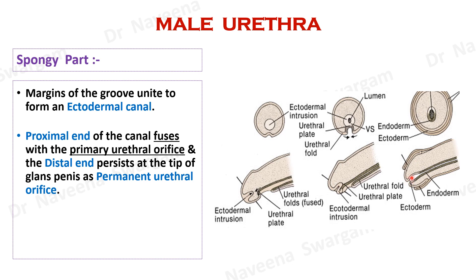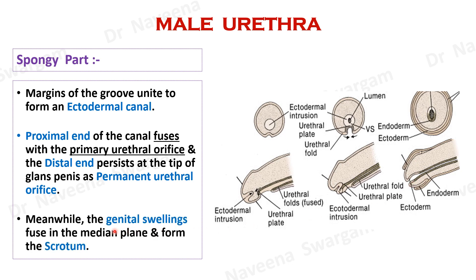While the ectodermal part of spongy urethra is developing, genital swellings fuse in the midline to form the scrotum.